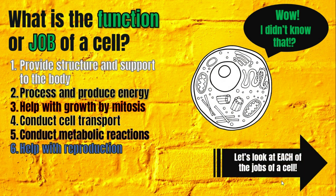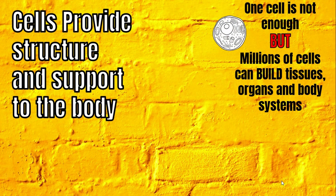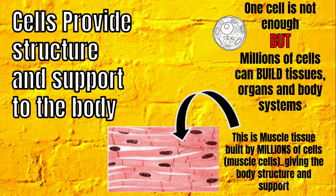Cells provide structure and support. One cell is not enough, but millions of cells can build tissues, organs, and organ systems. Once you get enough cells, you can build tissues. Once you get tissues that are the same, you can build organs. And once you get enough organs doing the same job, those are called your organ systems or body systems — like your circulatory system, cardiovascular system, or skeletal system. The picture shown is a picture of muscle tissue, and you need millions of muscle cells to build it.